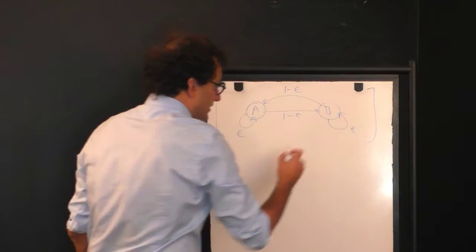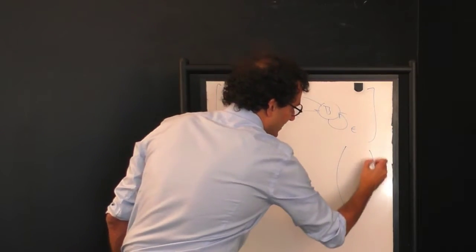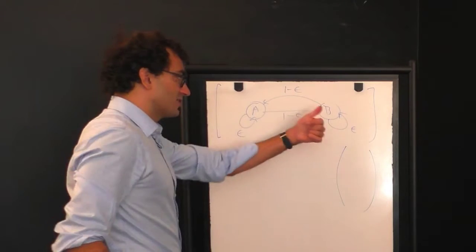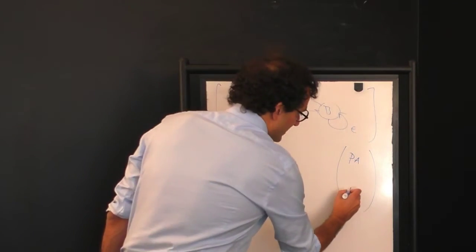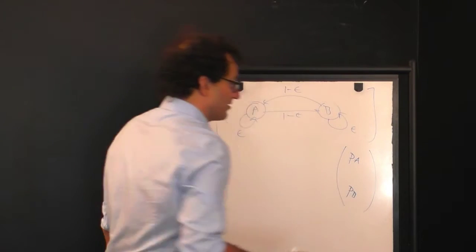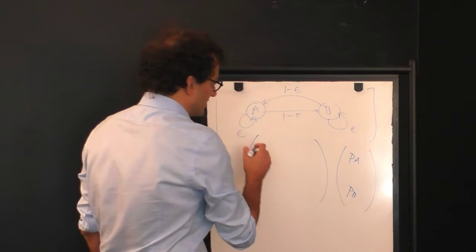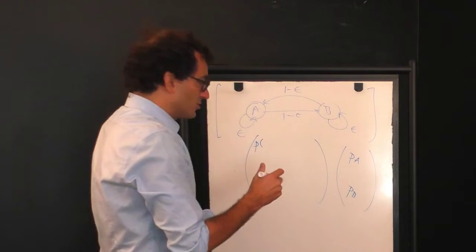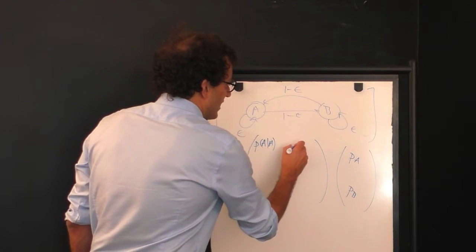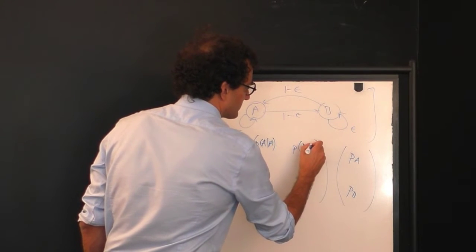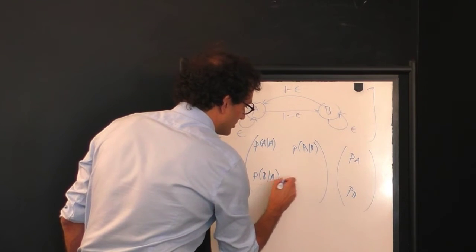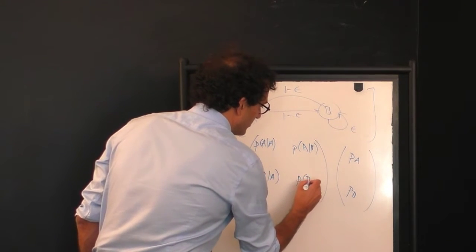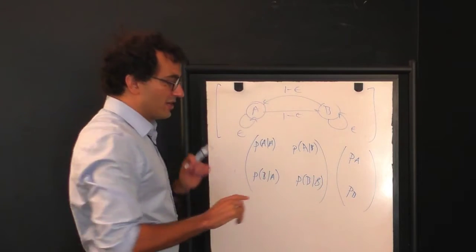A simple way to describe this model is to imagine that we describe the state of the system using a column vector. In this case, the column vector will have two entries. The first entry will be the probability that you're in state A, and the second entry will be the probability that you're in state B. Now we can describe the evolution of that system over time using a two-by-two matrix where the entries of the matrix look like this.